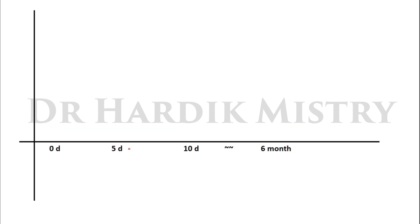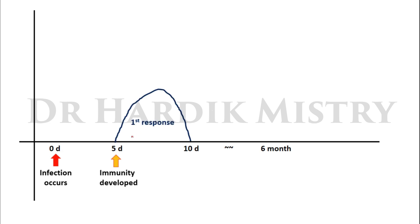Before proceeding to acquired immunity, we must clarify the concepts of negative phase, latent period, and secondary response. For example, the day infection occurs, we consider as day zero. Immunity develops around day five — so it takes five days to develop immunity. This is the first response: the immunity has developed, and the immune cells generated attack and kill the bacteria or virus. After about ten days, the infection is cleared completely from the body.